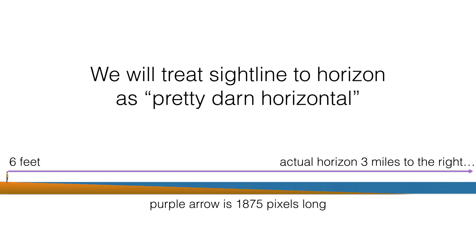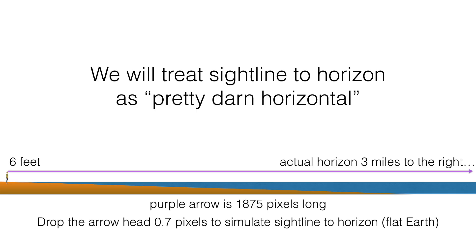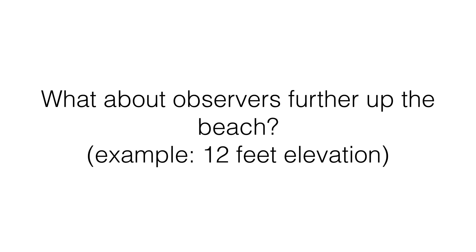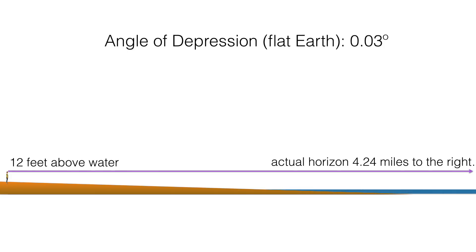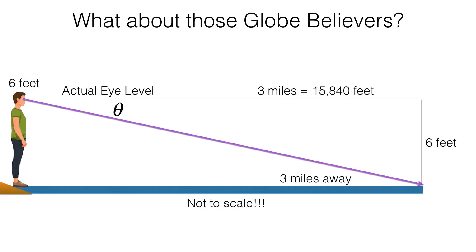To illustrate this in the slideshow: this purple arrow is 1875 pixels long, and if you drop the arrowhead less than a pixel - seven-tenths of a pixel - that would simulate your sight line. What about observers further up the beach? For example, a 12-foot elevation - let's say the tide goes out, so now we're 12 feet above the water. It turns out that the horizon is about four and a quarter miles away, and the angle of depression is three hundredths of a degree.